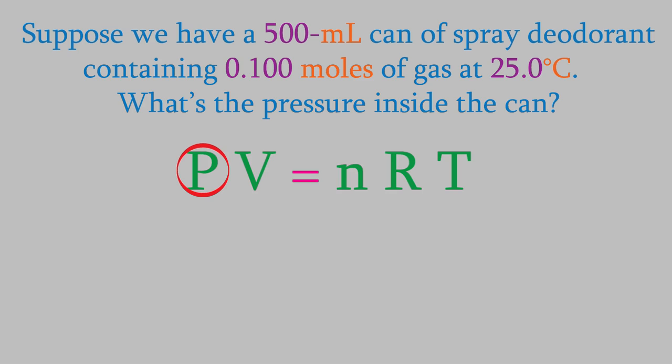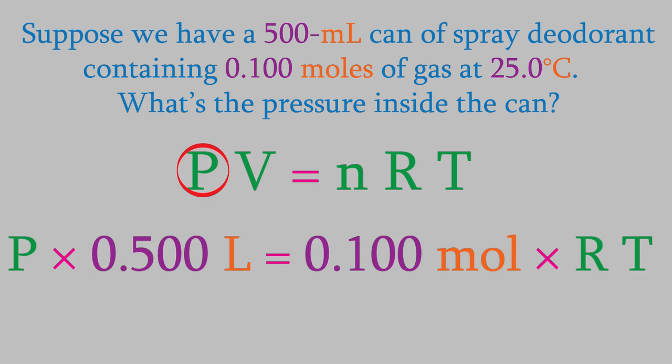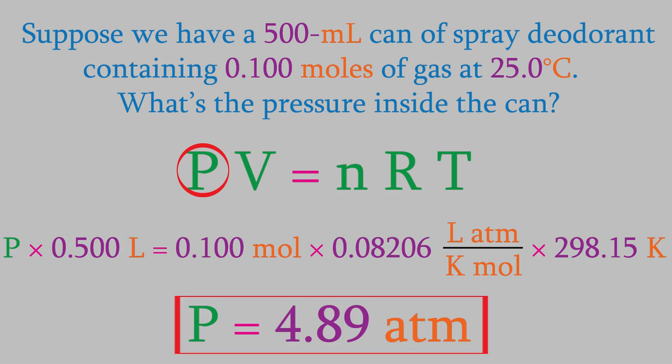The volume is 500 milliliters. But remember, we need the units for volume to be liters, so we'll convert this to 0.500 liters. Next, we'll use 0.100 moles for N. R is the ideal gas law constant, 0.08206 liters times atmospheres over kelvins times moles. And T is the temperature, which needs to be in kelvins. So that's 298.15 Kelvin. If you've forgotten how to convert Celsius to Kelvin, you should check video number 35 where we talked more about that. When we perform this calculation, we find that the pressure in the can is 4.89 atmospheres, almost 5 times atmospheric pressure. So that's what's in your can of spray deodorant.